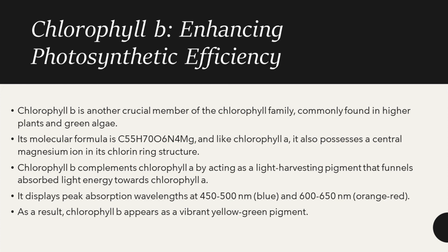Like chlorophyll A, it also possesses a central magnesium ion in its chlorin ring structure. Chlorophyll B complements chlorophyll A by acting as a light-harvesting pigment that funnels absorbed light energy towards chlorophyll A. It displays peak absorption wavelengths at 450–500 nm and 600–650 nm, ranging from blue to orange-red, and as a result chlorophyll B appears as a vibrant yellow-green pigment.